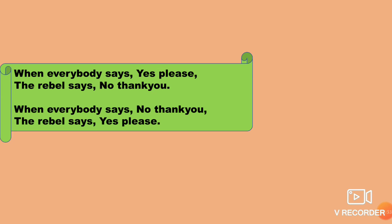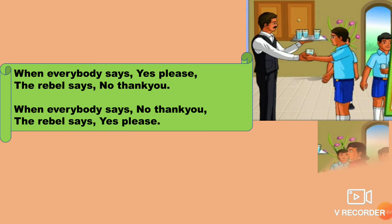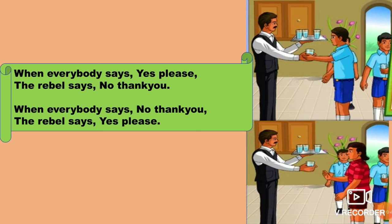When everybody says 'yes, please,' the rebel says 'no, thank you.' When everybody says 'no, thank you,' the rebel says 'yes, please.' So as you see in the picture, when something is offered to all the students, everybody says 'yes, please,' but the rebel says 'no, thank you.' So the whole poem is on the theme of the rebel — rebel means acting in the opposite manner and not agreeing with the other people who is with them. I hope you understood the main theme of the poem, children.